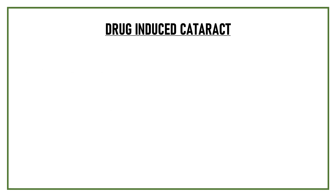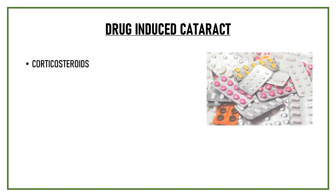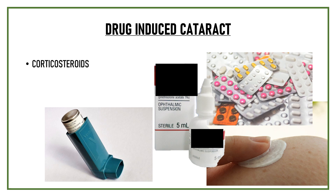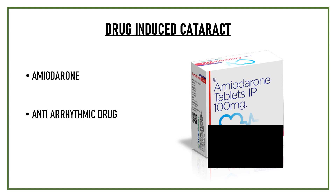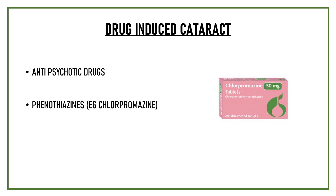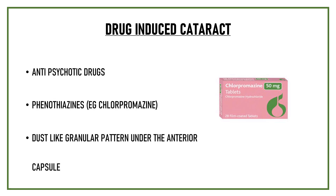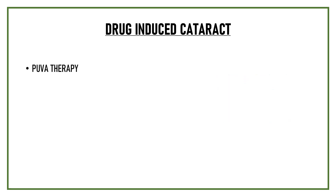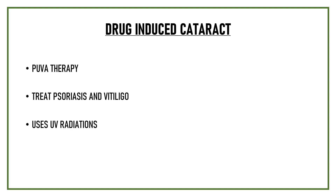Intake of certain drugs can also cause lens opacities. The most commonly implicated medications are corticosteroids — taken in oral, inhalational, topical eye drop, or topical skin ointment form — which produce a posterior subcapsular cataract. Amiodarone is another implicated drug; it is an antiarrhythmic that produces anterior capsular opacities. Miotics like ecothiophate and pilocarpine can also cause cataract. Antipsychotic drugs like phenothiazine, with chlorpromazine being most widely used, can cause a dust-like granular pattern under the anterior capsule. PUVA therapy used to treat psoriasis and vitiligo has been shown to cause cataract formation in rare cases.